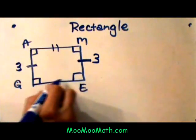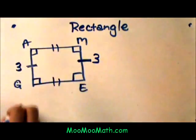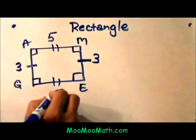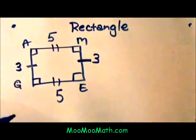AM is congruent to GE. These two sides are congruent, so we'll give that one a 5 and that one a 5. So you can see the opposite sides are congruent.